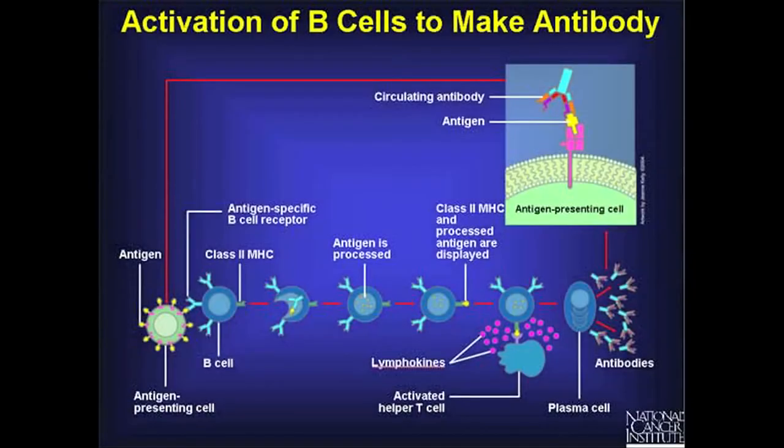B cells are also very important. Rather than directly targeting the cancer cell, what they do is produce antibodies, which then bind to the target on the cell to cause clearance or stop growth. We can also harness those normal adaptive and innate immune responses that can clear cancer cells — normally seen in the process of getting rid of viruses and bacteria — and use systems that promote those abilities.